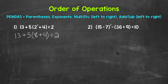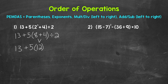So let's go through the order of operations. Any parentheses? Yes, so we need to do anything in parentheses here. We have 8 plus 4, which is 12. Now we can bring down everything we did not use. So we have 13 plus 5 times 12. Whenever you have a number next to parentheses, that's multiplication. So that's 5 times 12 divided by 2.